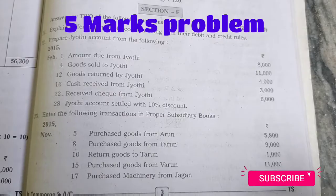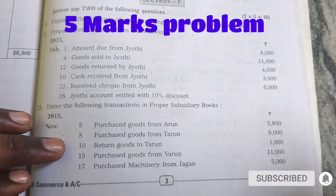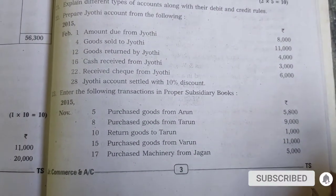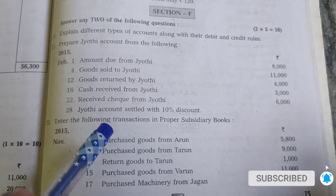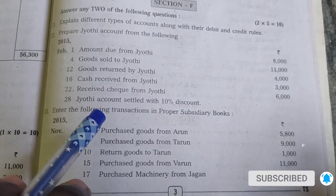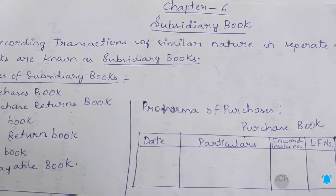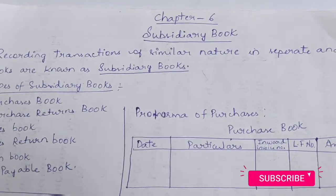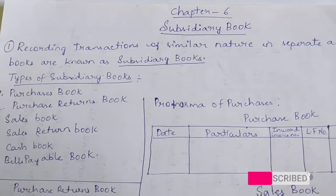I have three questions. First is a 5 marks problem. I have a question paper, and I have a problem with subsidiary books. I will make subsidiary books perfect — 5 out of 5. Let's begin. Subsidiary books are books used for recording transactions of a similar nature in separate and special books.